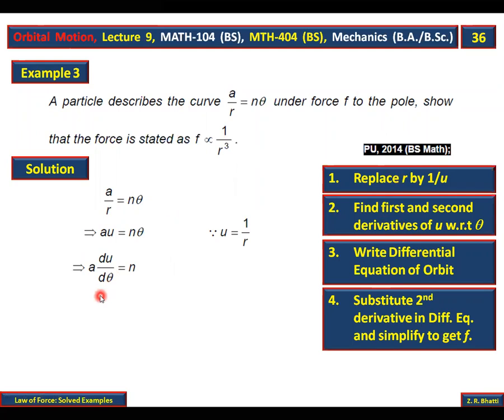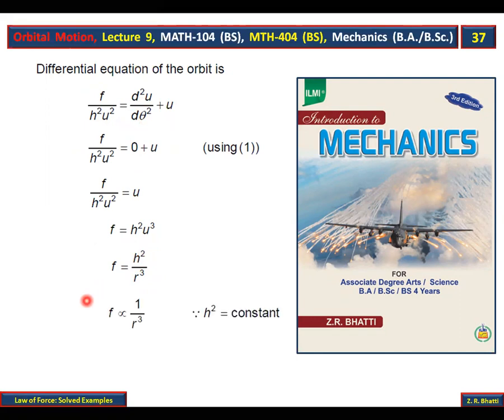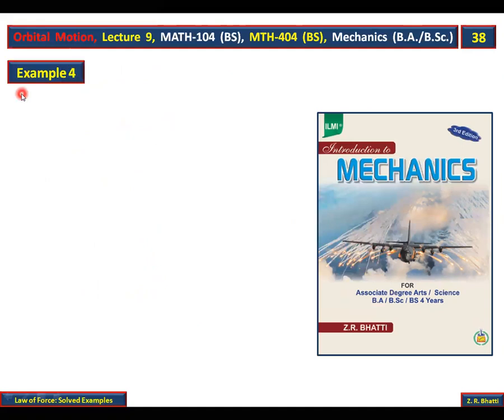Then the step is starting to work with the differential equation. f over h squared u squared plus u equals zero. After substituting, we get f equals a squared u cubed. Since u equals 1 over r, we get f equals a squared over r cubed. H squared is constant, therefore this is a proportionality constant. So f is proportional to 1 over r cubed.